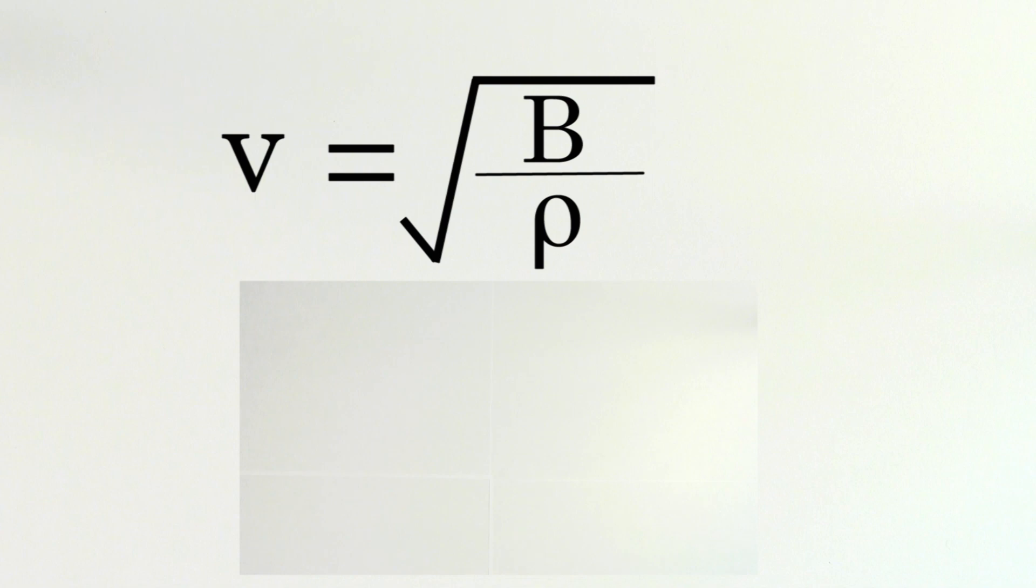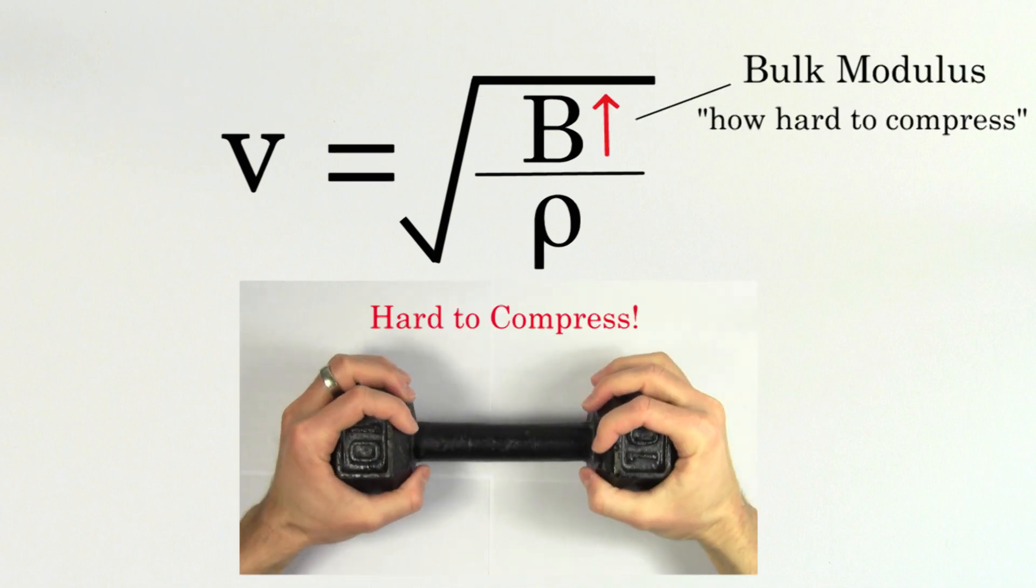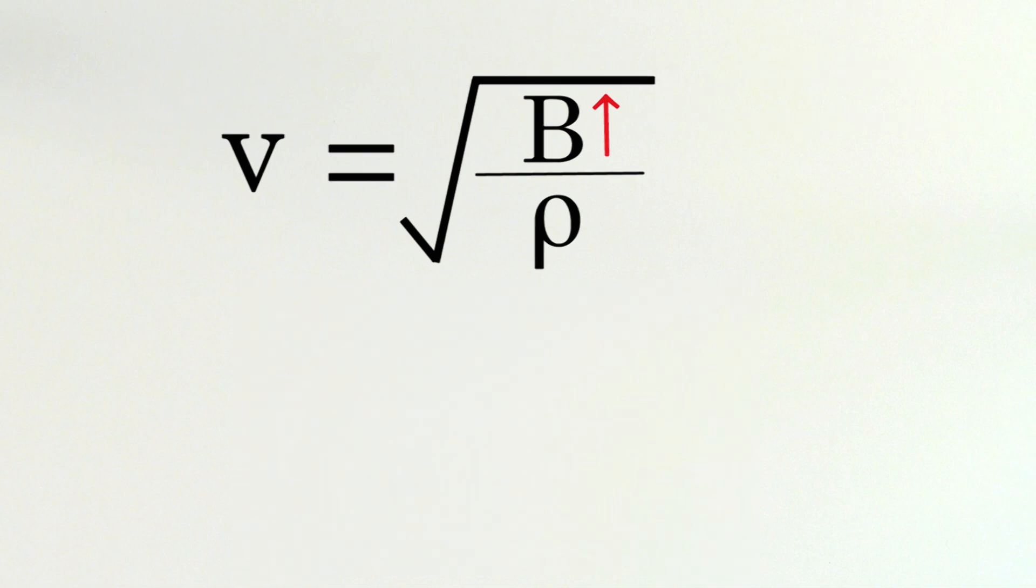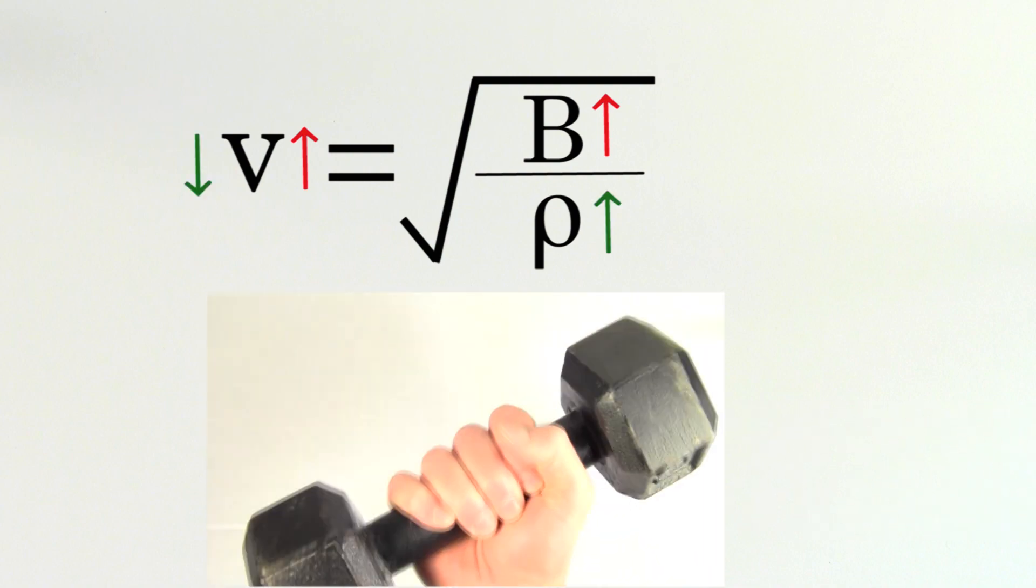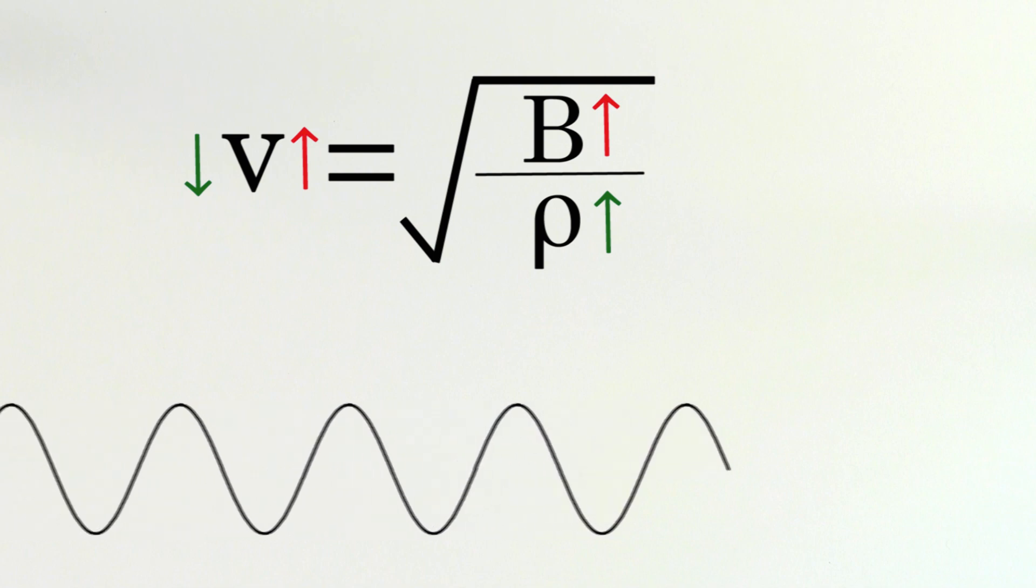So for example, let's consider a metal like iron. Iron is definitely more rigid and stiff than air, so it has a much larger bulk modulus than air. This would tend to make sound waves travel faster through iron than it does through air. But iron also has a much higher density than air, which would tend to make sound waves travel slower through it.